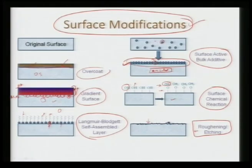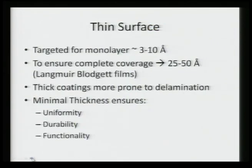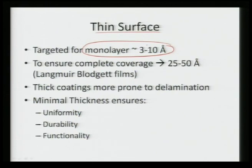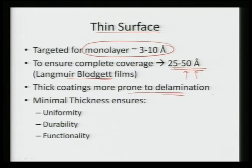These surface modifications are possible by all these techniques. Once we are coating a thin surface, we are targeting a monolayer of around 3 to 10 Ångströms in thickness. To ensure complete coverage, we can go up to 25 to 50 Ångströms of Langmuir-Blodgett films, because we do not want any part to remain uncoated. But as we go for thicker and thicker coatings, they become much more prone to delamination, because thicker coatings start incorporating residual stresses that may lead to breakage.